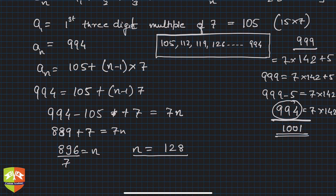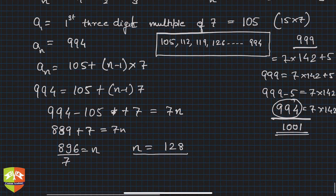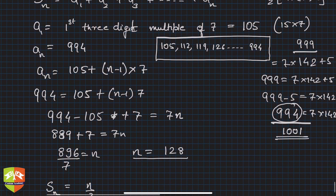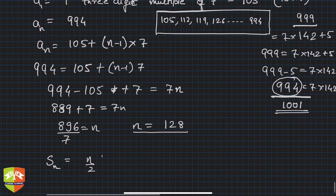So n is 128. We could find out n. So what to do now? Sn - how much? Nothing but n by 2. Either you adopt 2a plus n minus 1 times d or I will write first term plus last term.